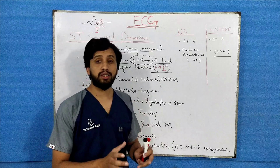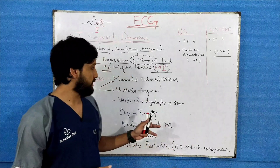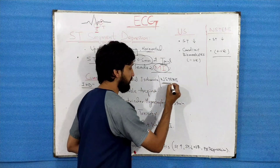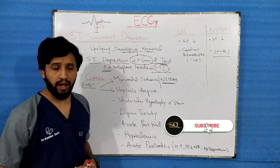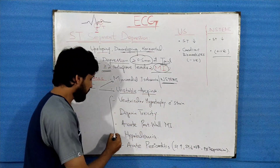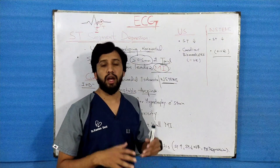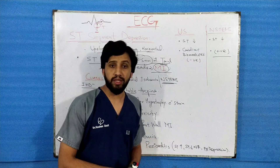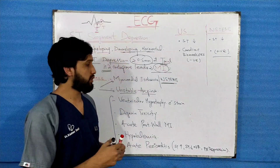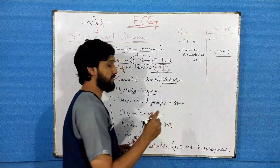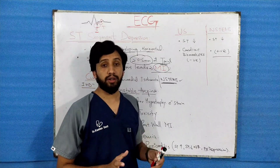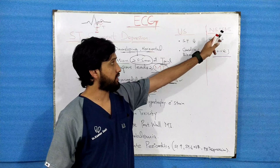The causes of ST segment depression include ischemic heart diseases (IHD), specifically non-ST segment elevated MI (NSTEMI) and unstable angina. Just as in ST-elevated MI you notice ST segment elevation, in NSTEMI and unstable angina you will notice ST segment depression on the ECG paper.